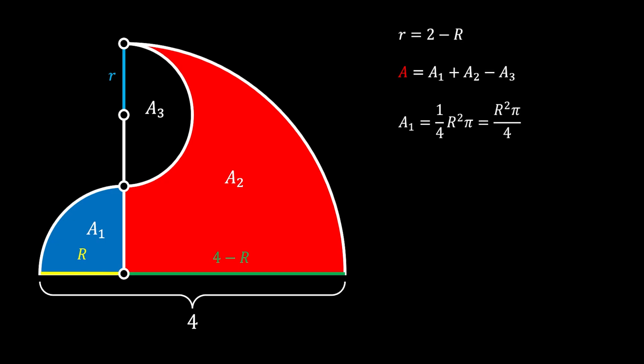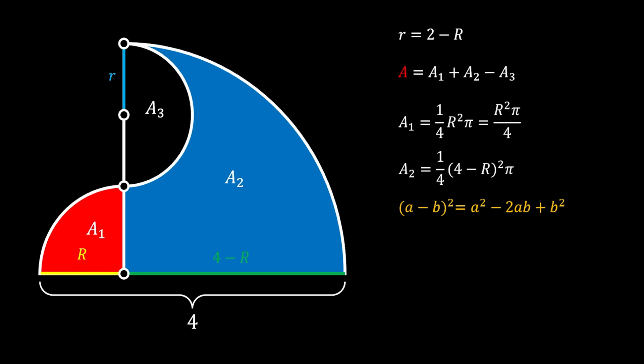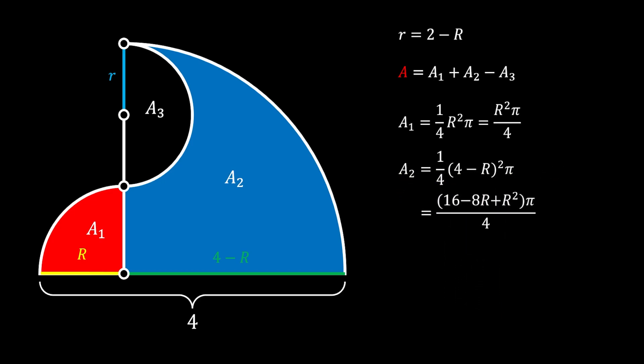Now let's look at the big quarter circle. Its area would be equal to one-fourth of (4 minus R) squared times pi. We can develop this by using the square of binomial formula: (A minus B) squared equals A squared minus 2AB plus B squared. So area 2 equals (16 minus 8R plus R squared) times pi over 4.